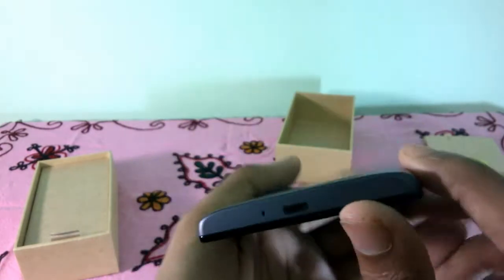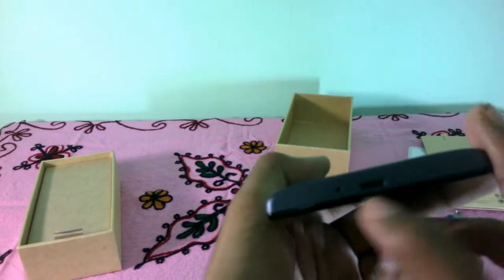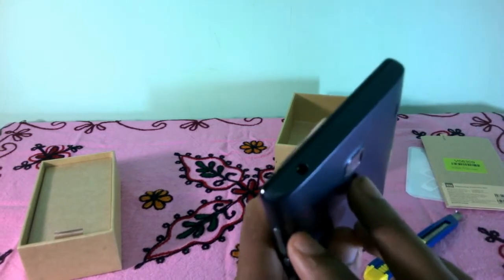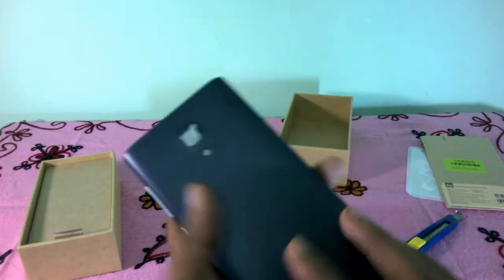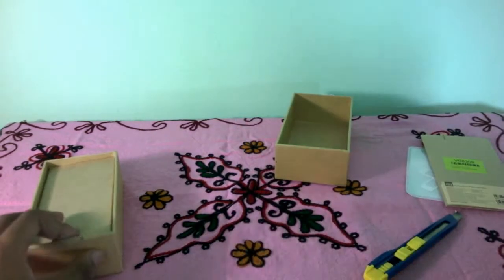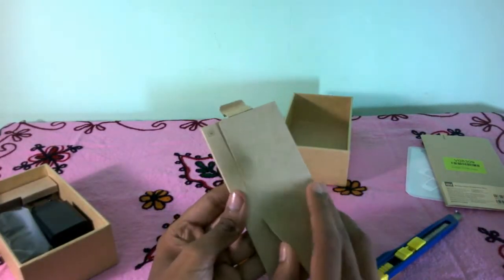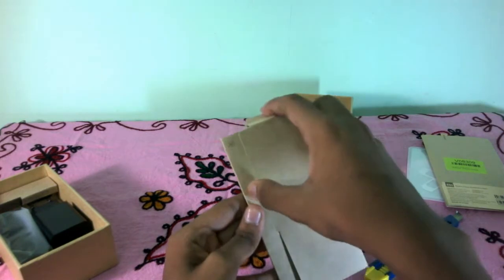Mi branding here. Down below, we have the primary microphone and the micro USB charging port. At the top, we have the 3.5mm headphone jack. Let's keep it aside and see what's in the box. Here we get a sort of envelope.